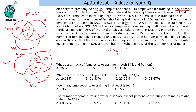The number of females taking training only in SAS is 25 percent of the males taking only in SAS. Since males taking only SAS is 40, females taking only SAS is 10. 20 percent of total employees — 90 — take training only in Python; subtracting 20 already placed for females leaves 70 for males taking only Python. The number of males taking SAS and SQL but not Python is 20 percent of total males, which is 50 — but that region is 15.